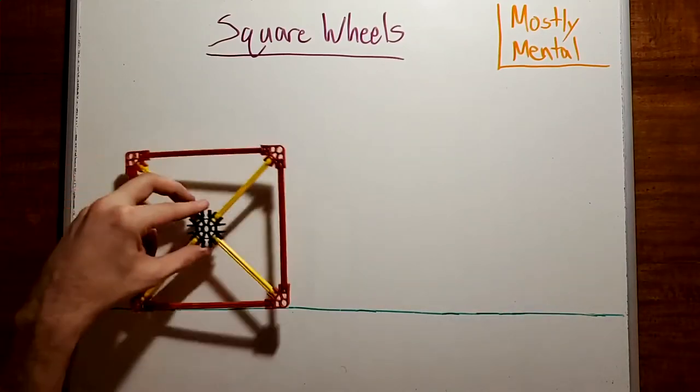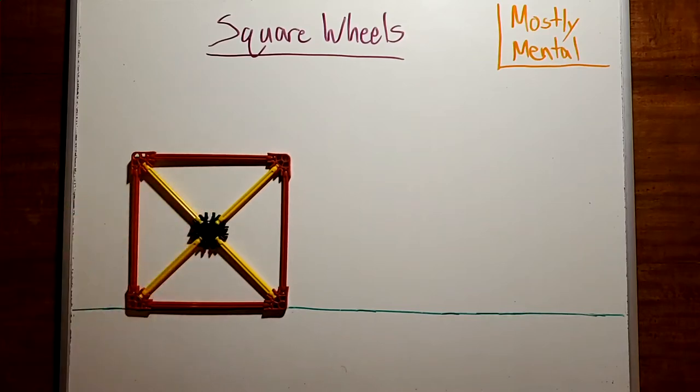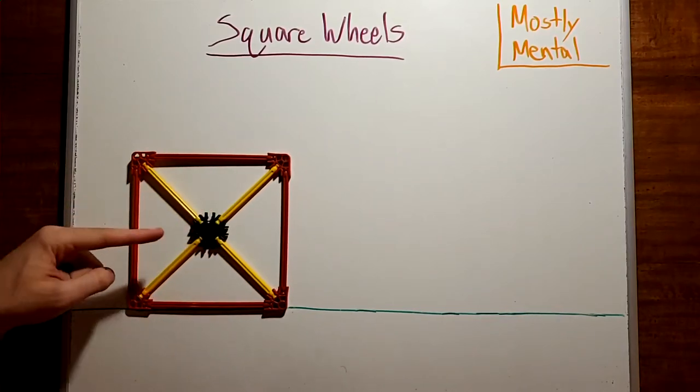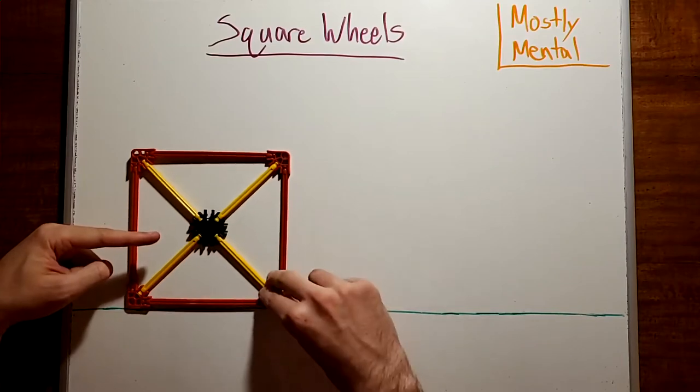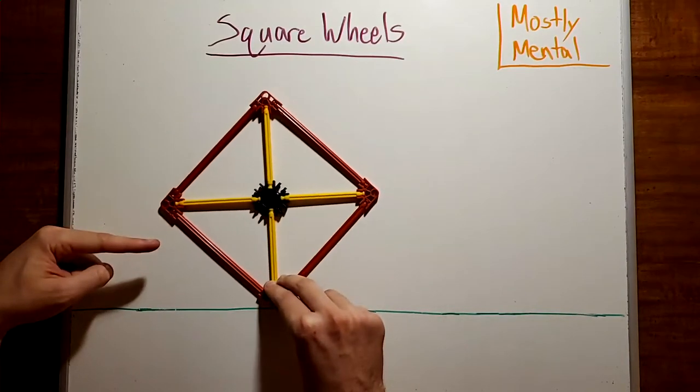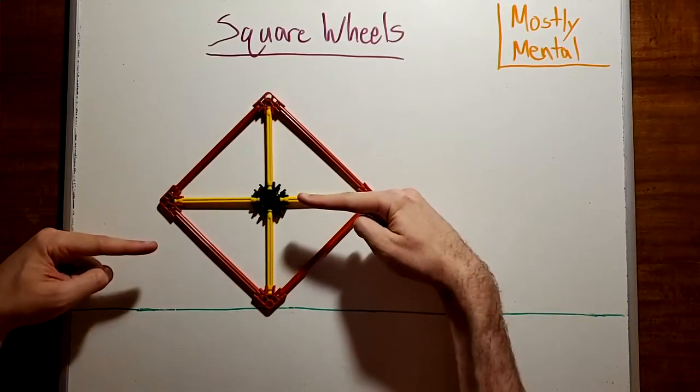With a square, though, we don't get that. When the wheel is on its edge, like here, the center is at one height. But when the wheel rotates up to its corner, the center's at another.